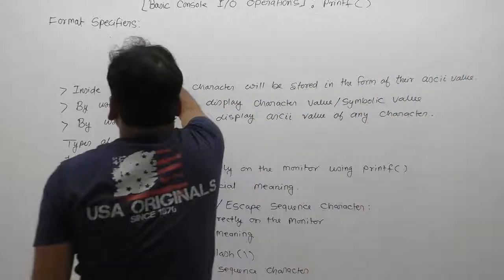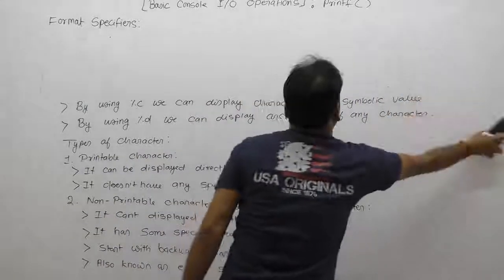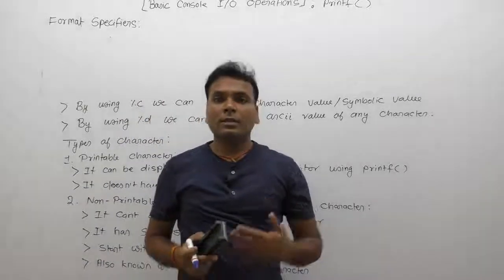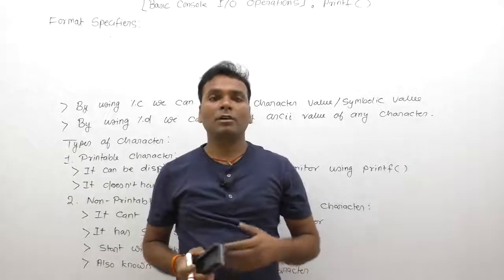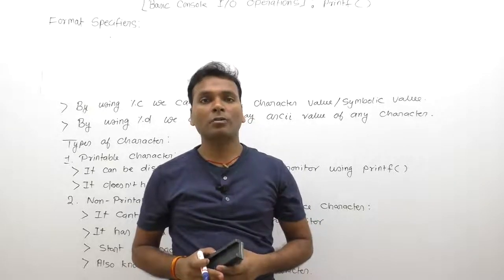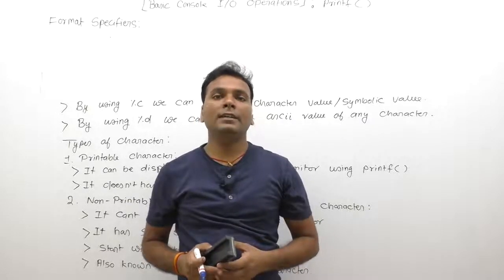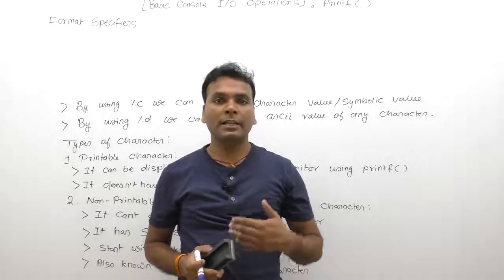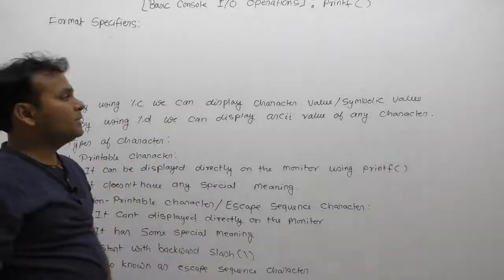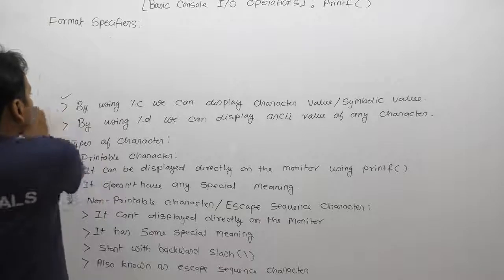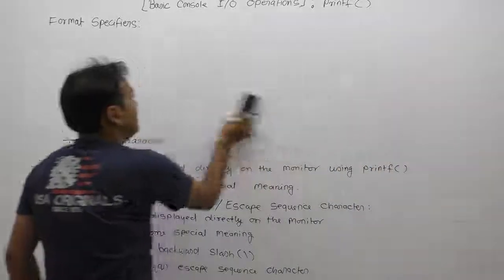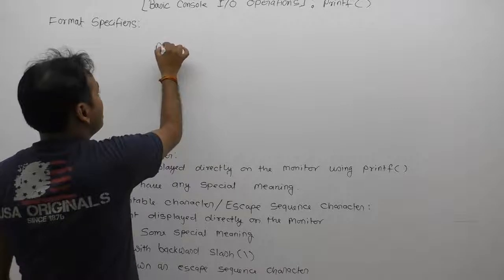Characters have two types of values: symbolic values and ASCII values. If you want to display a character value or symbolic value, you should use percent c format specifier. If you want to display the ASCII value of any character, you should use percent d. Using percent c, we can display the symbolic value; using percent d, we can display the ASCII value of any symbol or character.